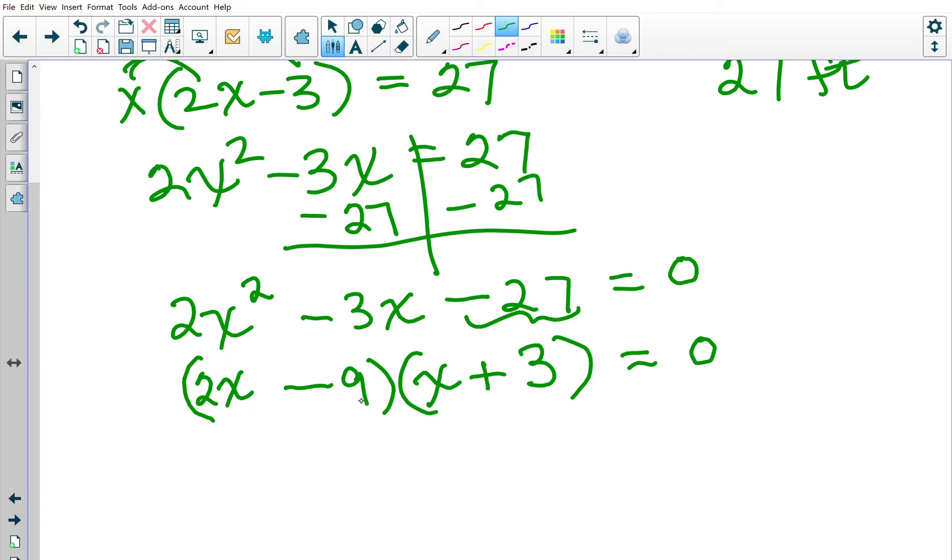Now if this factor times this factor equals zero, either 2X minus 9 equals zero or X plus 3 equals zero. So we solve each of these.